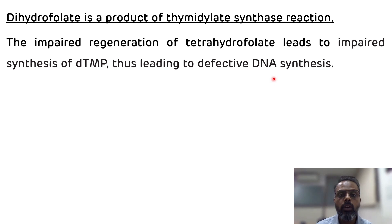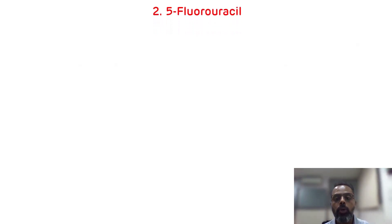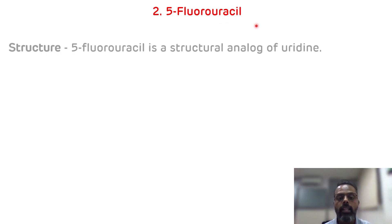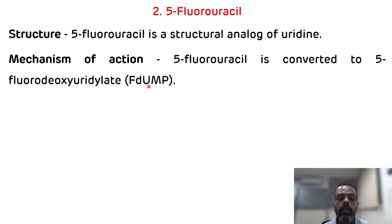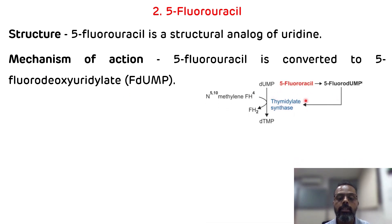That is the first example of pyrimidine nucleotide synthesis inhibitors acting as anti-cancer drugs. The second example is 5-fluorouracil. As the name suggests, 5-fluorouracil is the structural analog of uridine. Its mechanism of action: 5-fluorouracil is converted to 5-fluorodeoxyuridylate, which inhibits the thymidylate synthase enzyme via suicidal inhibition.